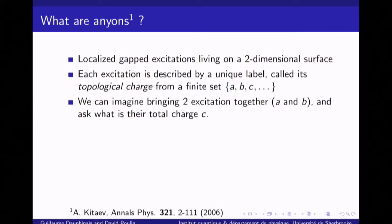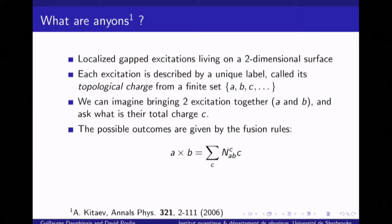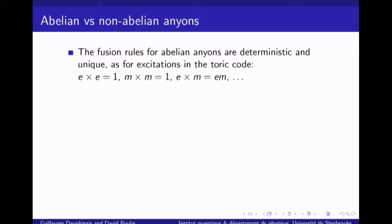We can ask: if we have two anyons of charge A and B, what happens if we fuse them together? The possibilities are given by the fusion rules, typically written as A cross B, with a list of possible outcomes given by the N matrices. There are two general classes of anyons: abelian and non-abelian. For the abelian ones, fusion rules always have only one single possibility, meaning you always know deterministically what the resulting charge will be. An example is the excitations of the toric code.